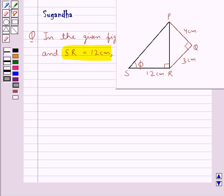We are given this figure with the lengths of PQ, QR, and SR, and we have to find cot φ. Let's see the solution.